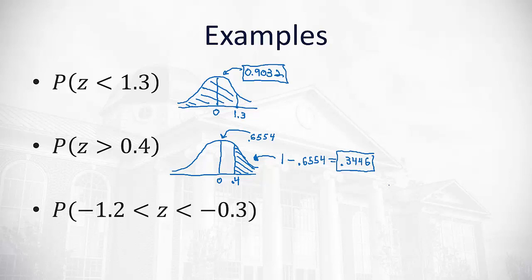What if I want the probability my z value is between two numbers? So now we've got our normal curve with 0 in the middle. I'm going to use red to represent the negative 1.2, and I'll use green to represent the negative 0.3.